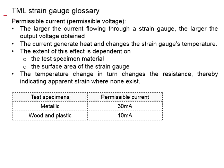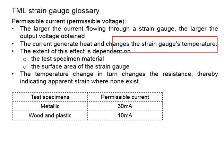Next, we talk about the permissible current, or we can say it is related to permissible voltage. The principle is this: the larger the current flow through a strain gauge, the larger the output voltage obtained. However, the current generates heat, which changes the temperature of the strain gauge. You know that strain gauge is susceptible to temperature, and temperature can lead to inaccurate measurement.